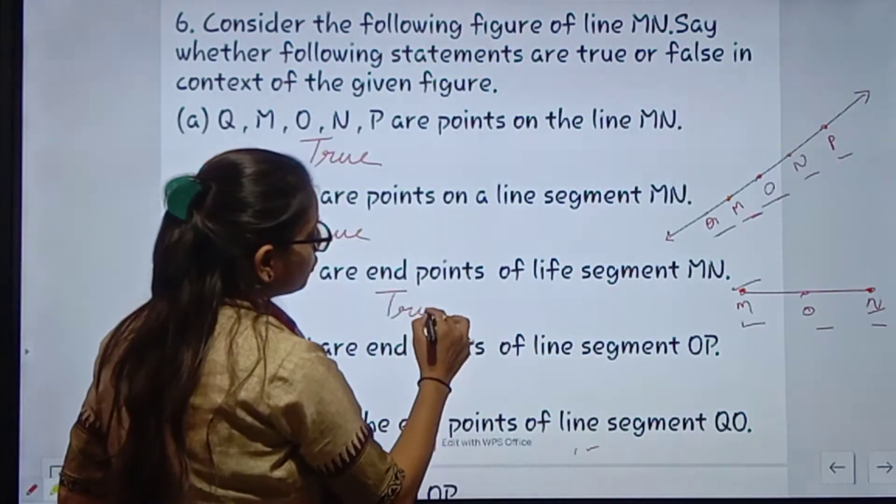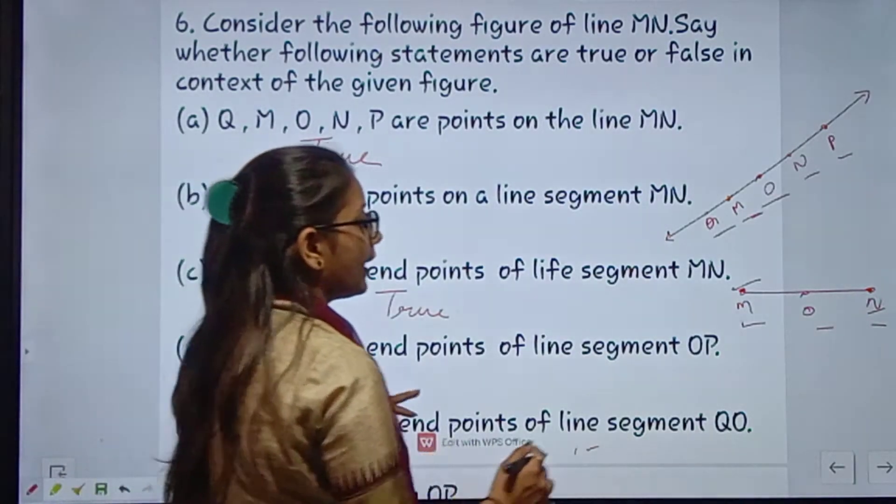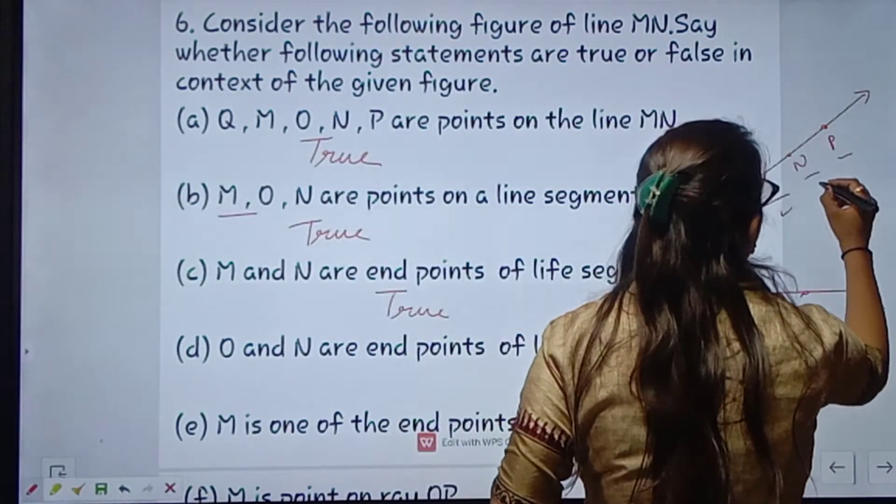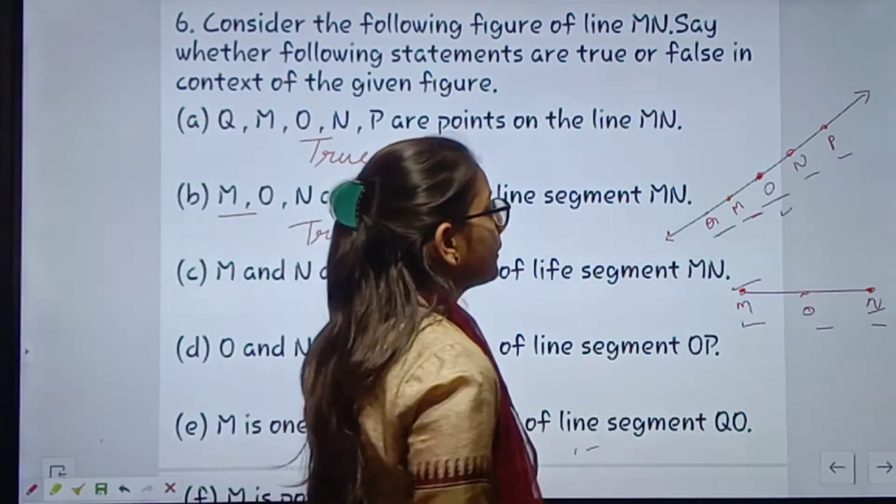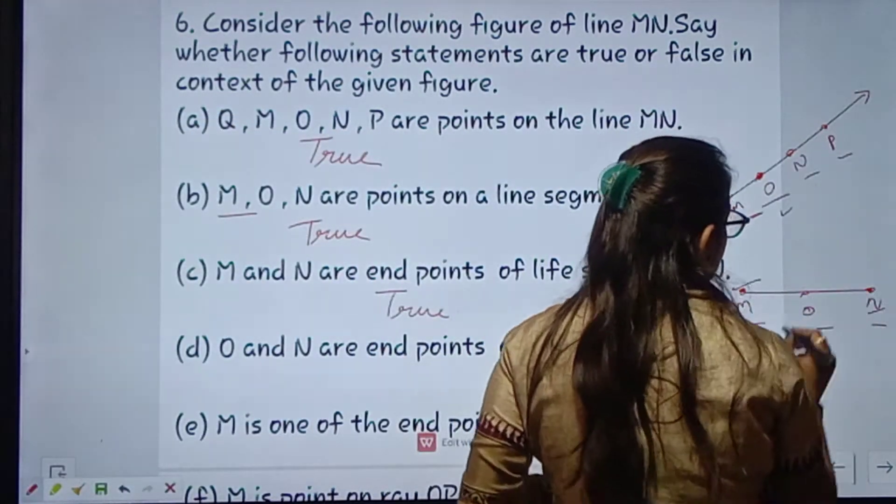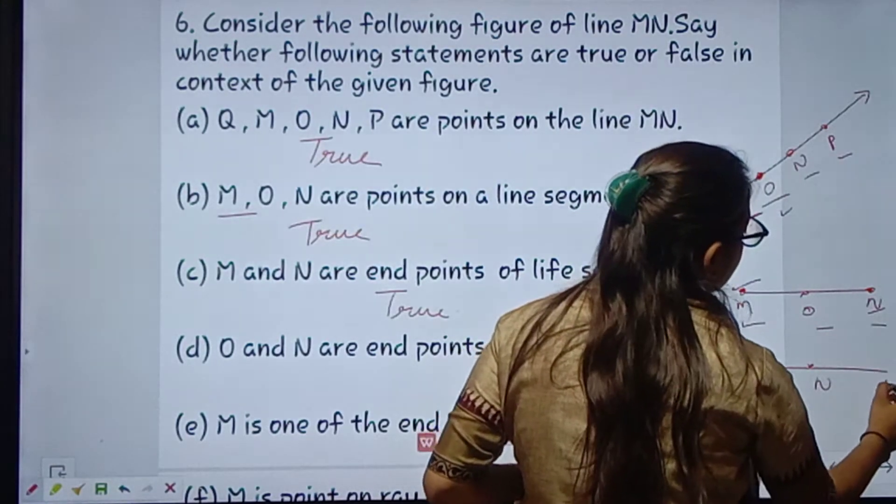Next is O and N are endpoints of line segment OP. O and N - yeh dono jo point hai end points of line segment OP. OP yahan pe ye figure aise draw ho raha hai - O, N, P.